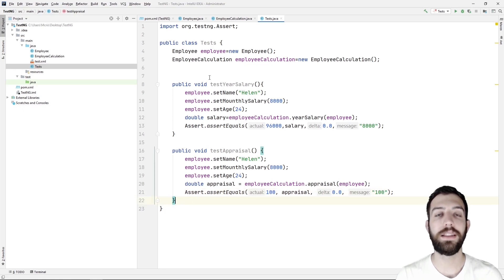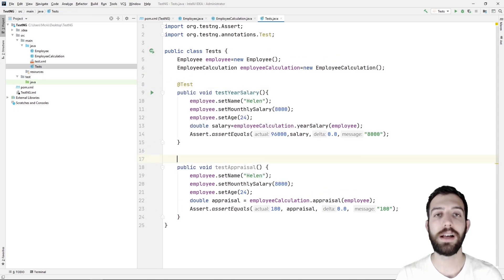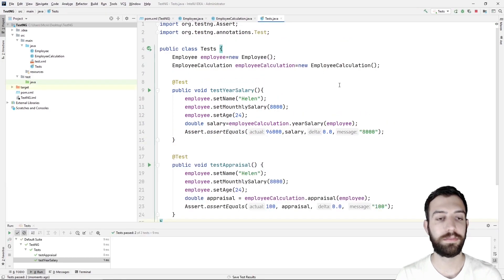Finally, we write the test annotation before the two methods to be able to execute them as test cases. Now we can run the program. As you can see, the methods have passed the test.